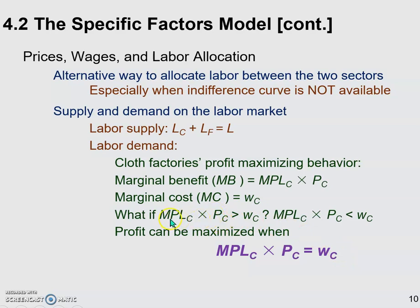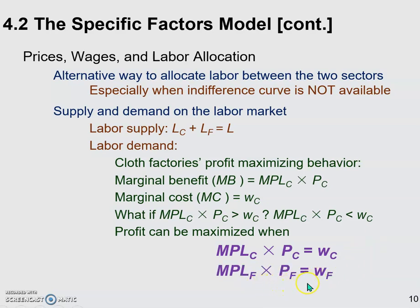When firms hire more and more labor, MPLC will go down — the more you put into production holding other inputs constant, the lower the marginal product of labor — until the two sides are equal. This is the profit-maximizing condition. Once we solve for this, the cloth factories achieve their maximum profit. The same thing happens in the food industry: when the marginal benefit equals marginal cost — the wage paid — the food industry can maximize its profit.